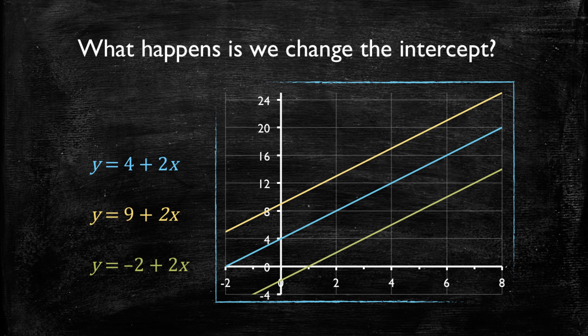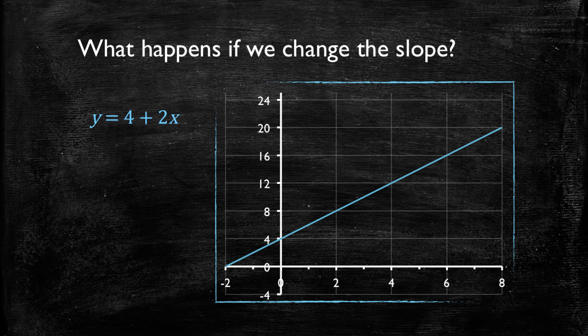Now, what happens if we change the slope? If we change the slope, we're changing the sensitivity of y on values of x, meaning how fast or how slow y will change when a unit of x is changed.